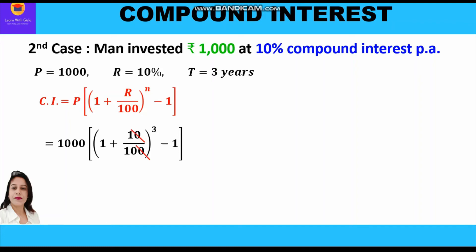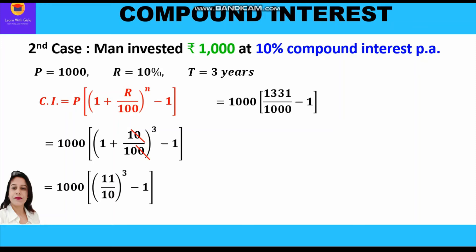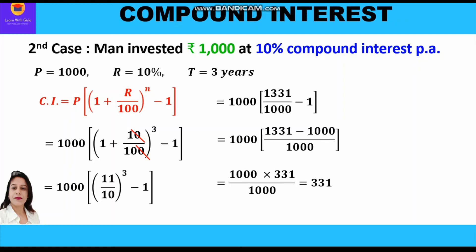Now 11 cubed is 1331 and 10 cubed is 1000, so we write 1000 × [1331/1000 − 1]. Taking the LCM gives 1000 × [(1331 − 1000)/1000], which equals 1000 × 331/1000. The 1000s cancel, and we get compound interest equal to rupees 331.